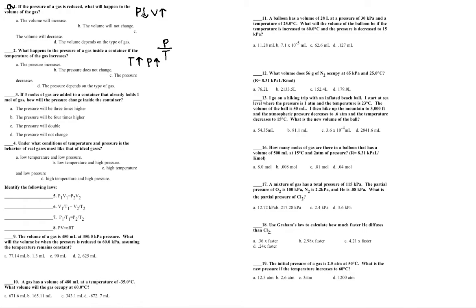The formula for Boyle's Law is P times V — if pressure decreases, volume has to increase for the product not to change. For Gay-Lussac's Law, since it's P over T, if temperature increases, pressure has to also increase for the ratio not to change. So pressure is going to increase — answer A.